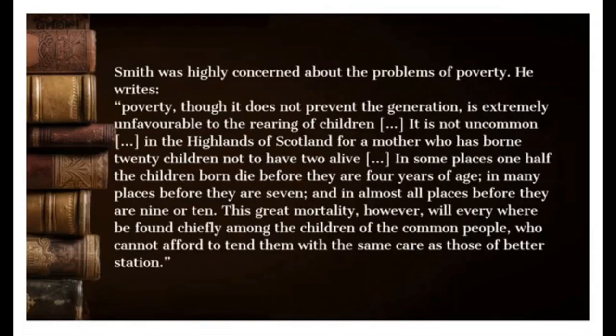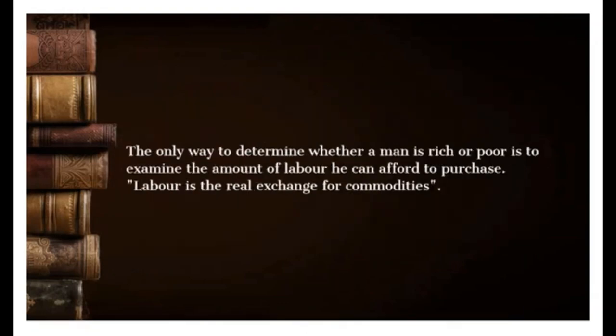Smith was highly concerned about poverty. He writes: 'The poverty, though it does not prevent the generation, is extremely unfavorable to the rearing of children. It is not uncommon in the Highlands of Scotland for a mother who has born twenty children not to have two alive. In some places one half the children born die before they are four years of age; in many places before they are seven; and in almost all places before they are nine or ten. This great mortality will everywhere be found chiefly among the children of the common people, who cannot afford to tend them with the same care as those of better station.' The only way to determine whether a man is rich or poor is to examine the amount of labor he can afford to purchase. Labor is the real exchange for commodities.